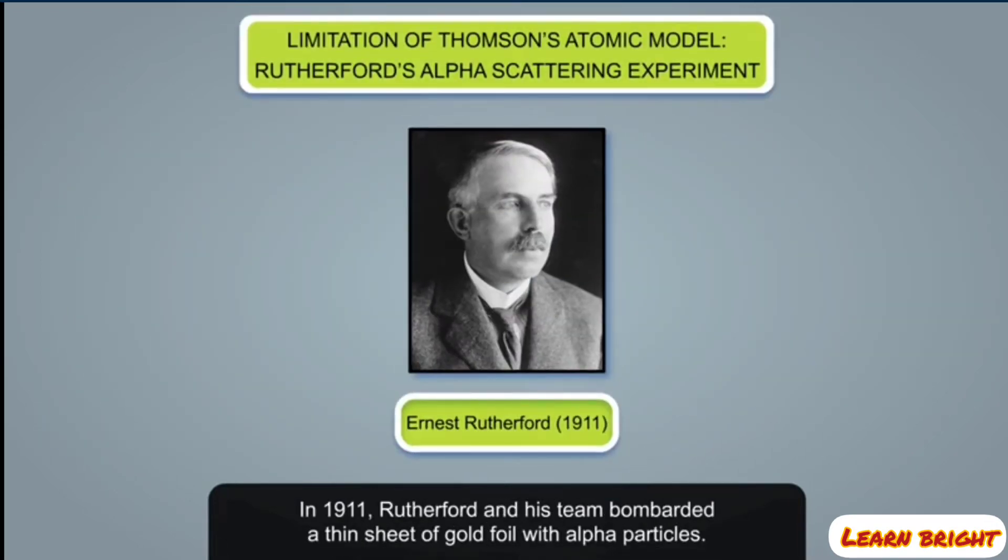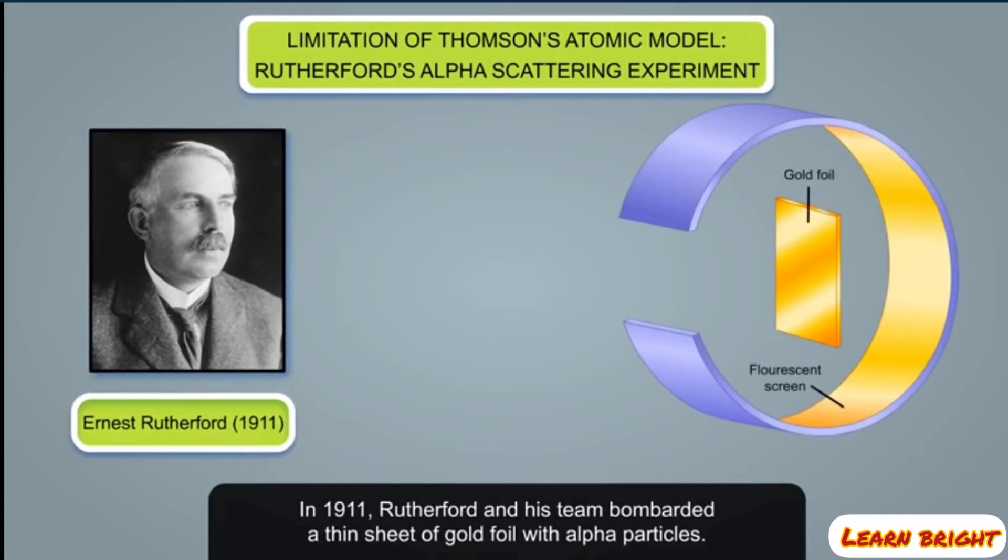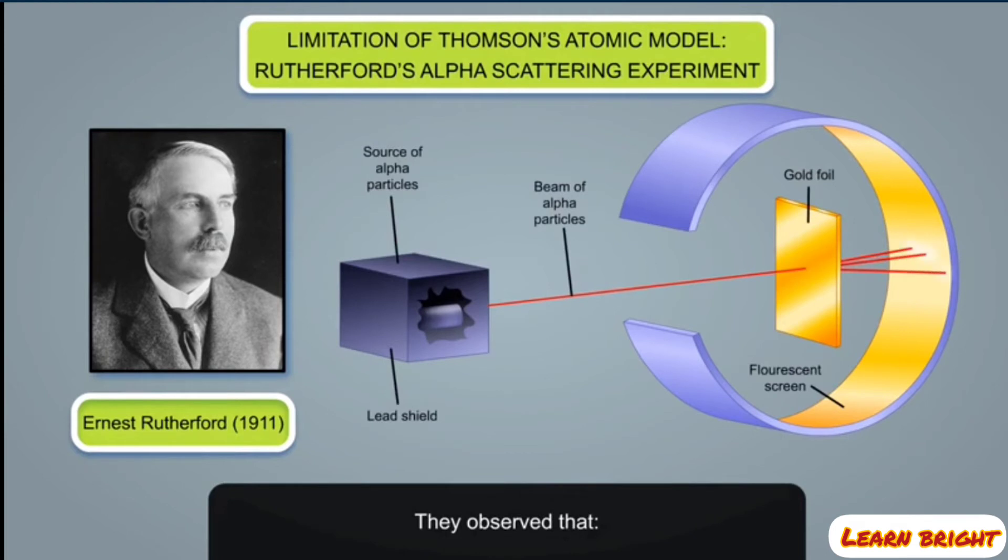In 1911, Rutherford and his team bombarded a thin sheet of gold foil with alpha particles. They observed that most of the alpha particles passed undeflected, some got deflected at small angles, and a very few, about one in 20,000, completely rebounded.